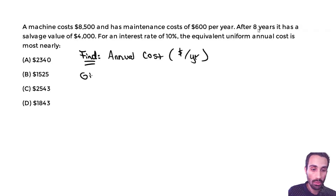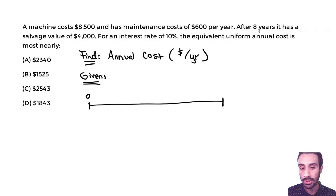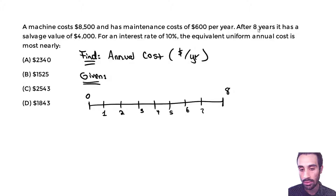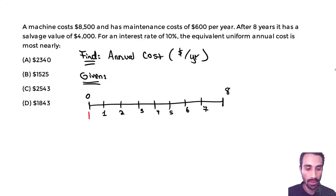Let's write down what we're given. When you do these cash flow diagrams, always draw that cash flow diagram. Zero is always here and we know we're going up to eight years. So this is 1, 2, 3, 4, 5, 6, 7, and we go up to 8. The machine cost at the very beginning — what you put down at present — is $8,500.